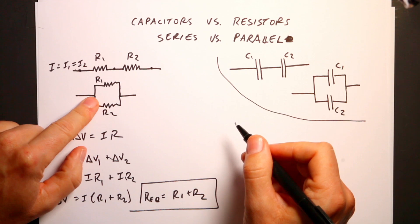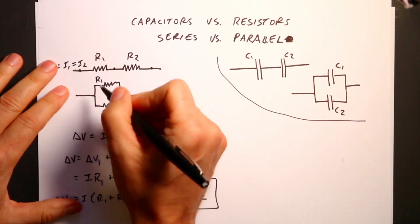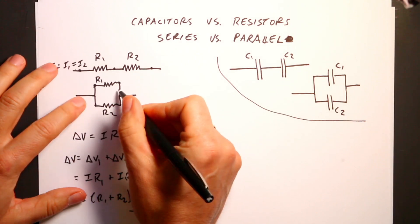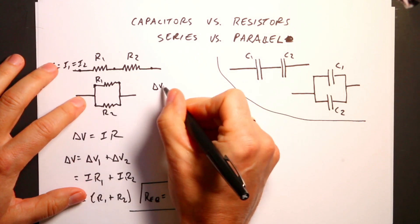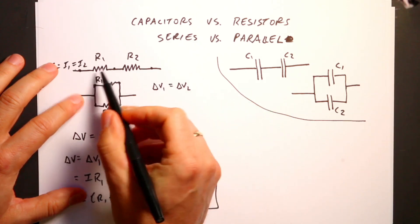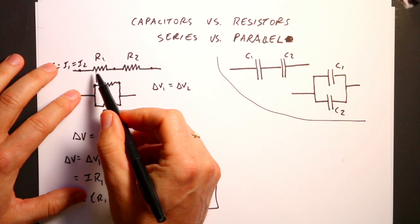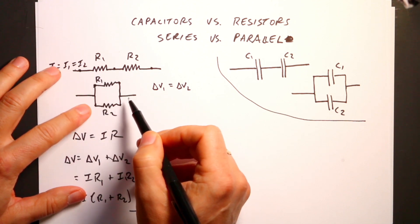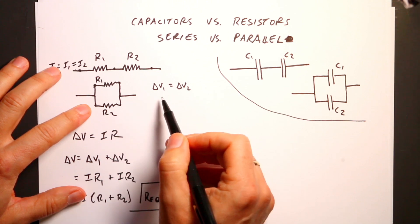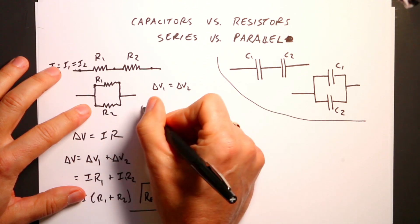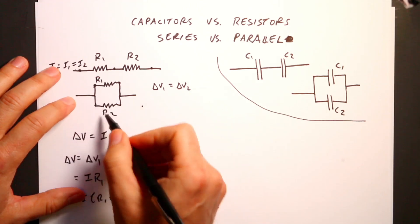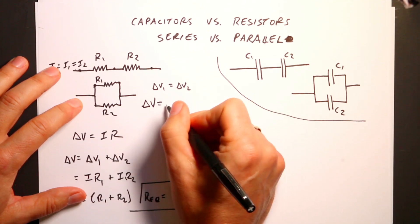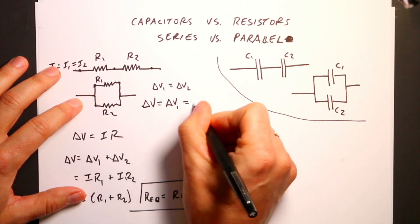What about in parallel? What makes things parallel is that both ends are connected, and that means delta V1 equals delta V2. Things in series have the same current; things in parallel have the same change in potential. The change in potential across the two is the same, so delta V equals delta V1 equals delta V2.